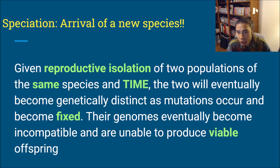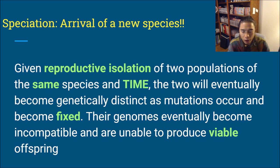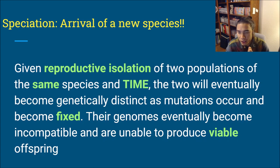Let's talk about speciation, which is the arrival of a new species. A lot of this involves evolution, which is populations changing over time. Generally, you have a population and then part of the population starts to become so different from the other part that they are no longer able to breed with each other. Given reproductive isolation of two populations of the same species and time, the two will eventually become genetically distinct as mutations occur and become fixed. Their genomes eventually become incompatible and they are unable to produce viable offspring.